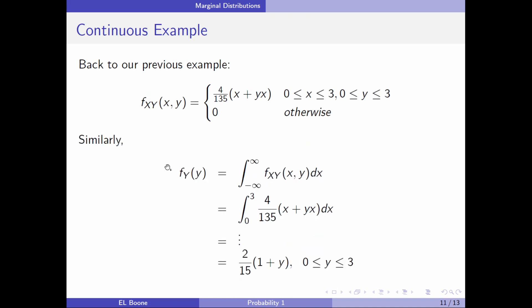We can do the same thing for y, right? We can get the marginal for y out, f of y of y. But this time we integrate out x. I'm not going to show all the steps, but you end out with 2 over 15 times 1 plus y. And that's where y is between 0 and 3.